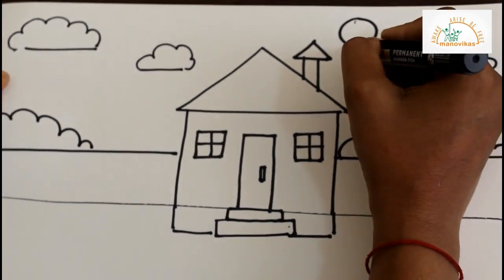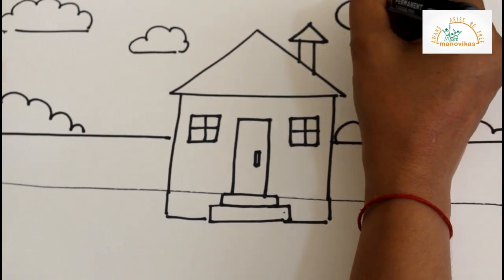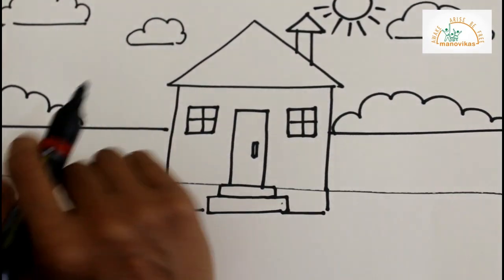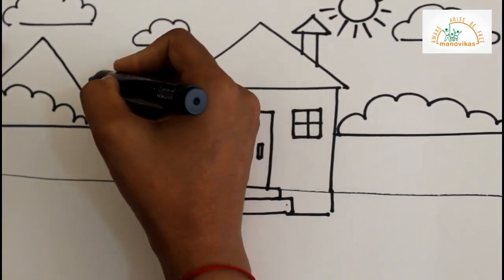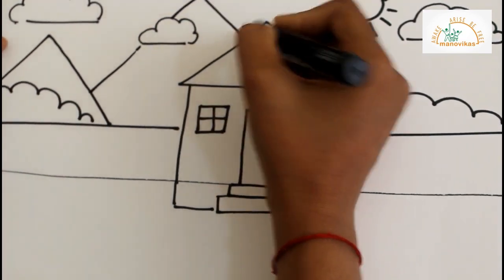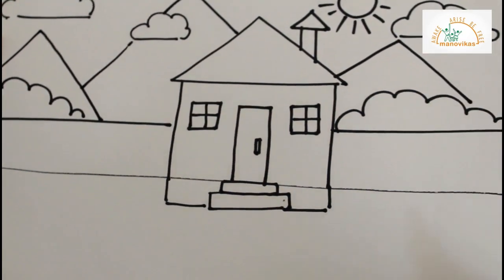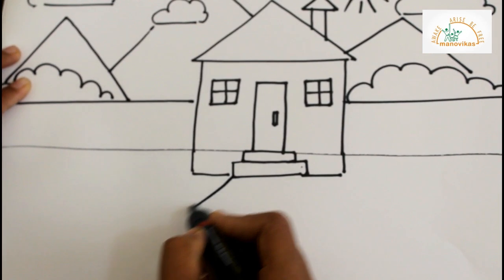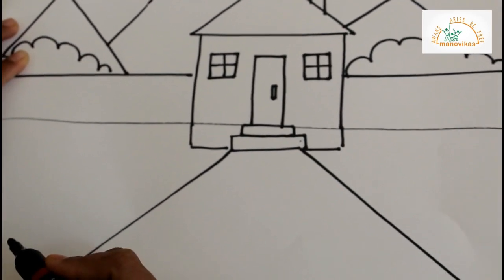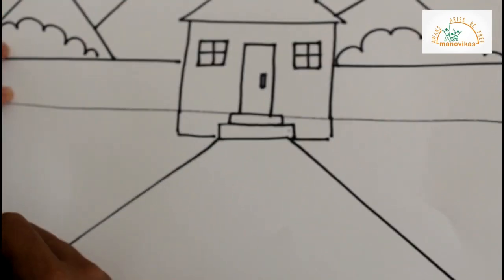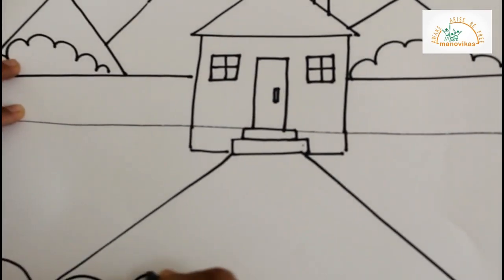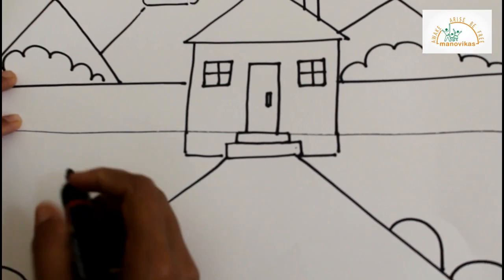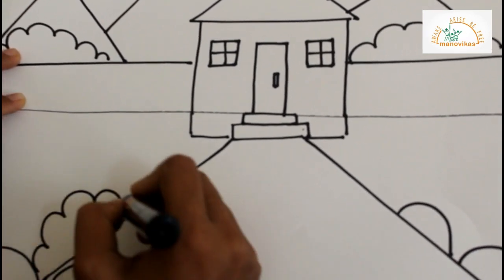A circle — the sun. Shall add in some more triangles for the background. Shall draw two slanting lines. Some big curves.